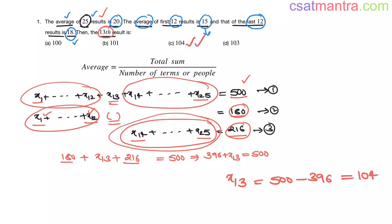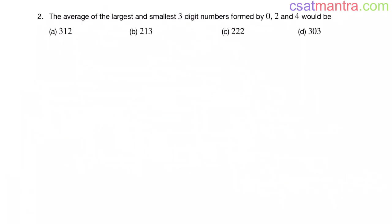So this is how you can find out the missing number. Instead of results, it can be anything. Number of runs scored in a test match in different innings, the salary of an employee in different months, marks secured in different examinations. It can be anything. Basically you will be employing only one formula, that is average equals total sum by number of terms or number of people.